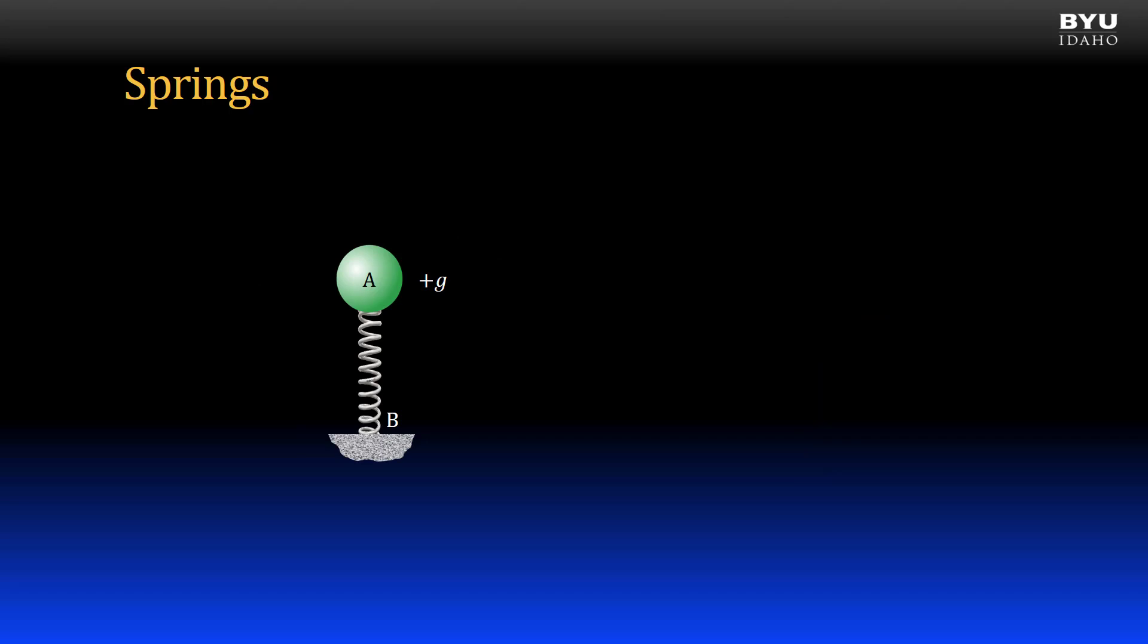Here's another static system consisting only of a mass, gravity, a spring, and a support. In this system, the spring will be subjected to a compression force with its loaded length shorter than its unloaded length. A free body diagram may be drawn like this. Note that force AB, which represents the spring, is drawn towards particle A.